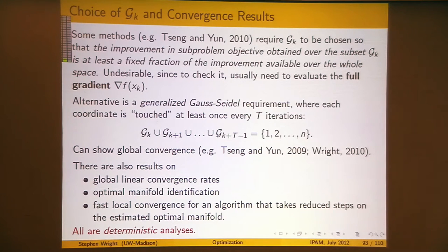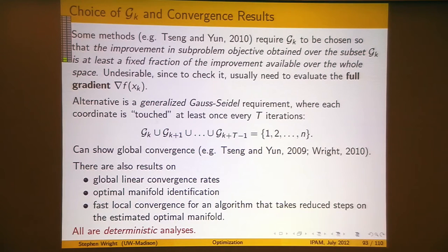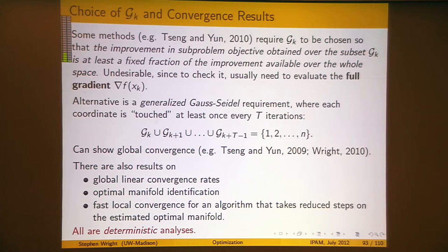Gauss-Seidel is the approach where you cycle around the components of x and they take turns being updated — this is a generalization of that idea. There are convergence analyses due to various authors and a recent paper of mine where we make this assumption. You can add on regularization terms, and in some cases prove some sort of global linear convergence rate. We can also talk about homing in on the interesting part of the space — in the L1 case, homing in on the non-zero components of x. You can prove that switching to a higher-order method on the reduced space can yield fast local convergence as well.